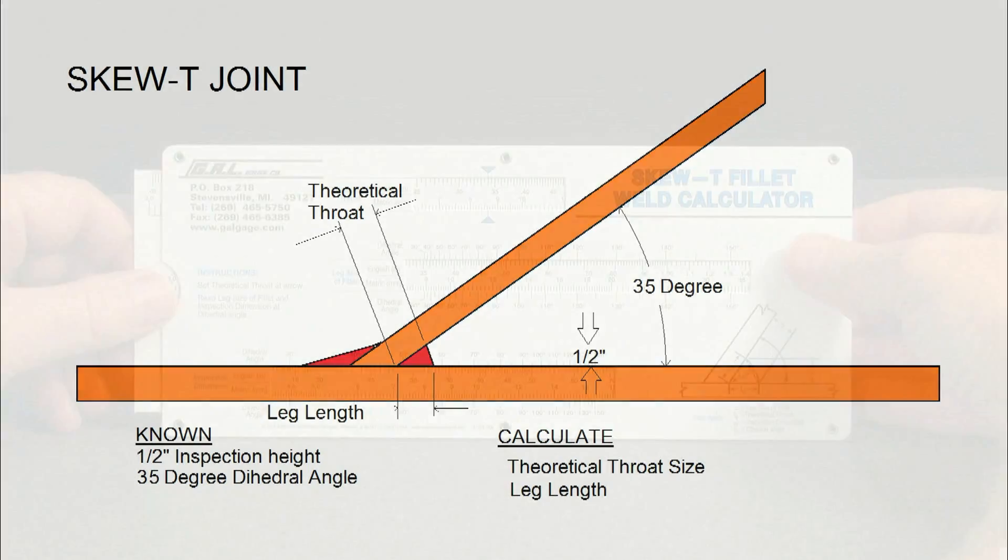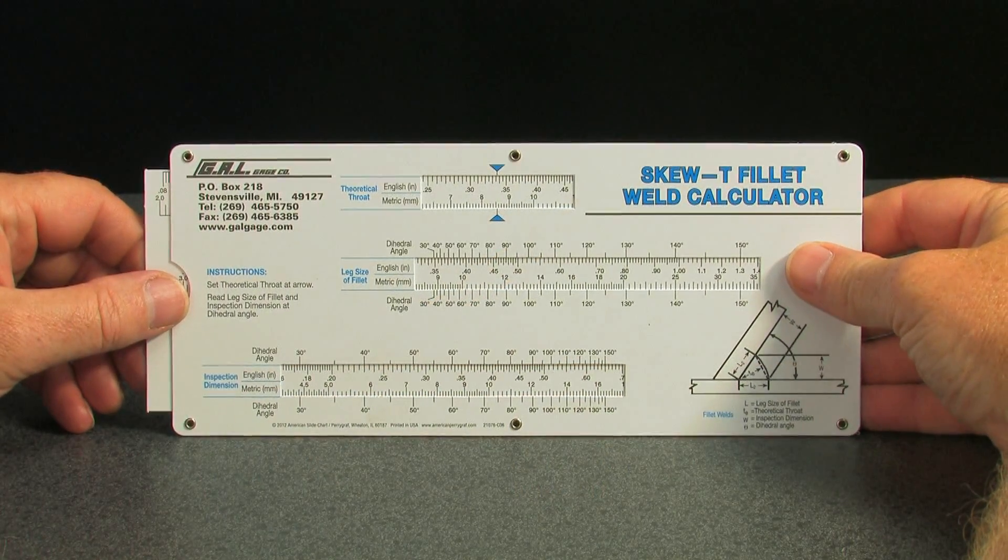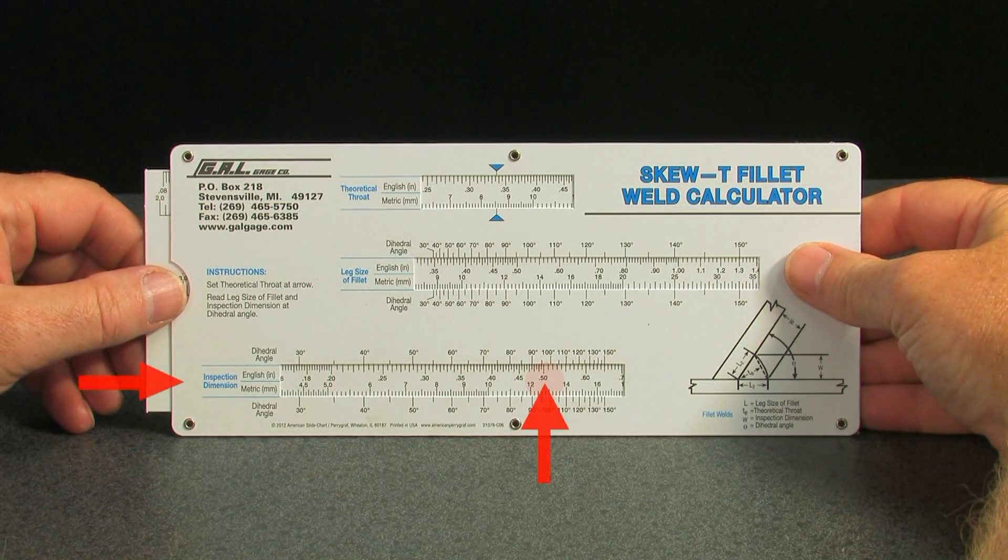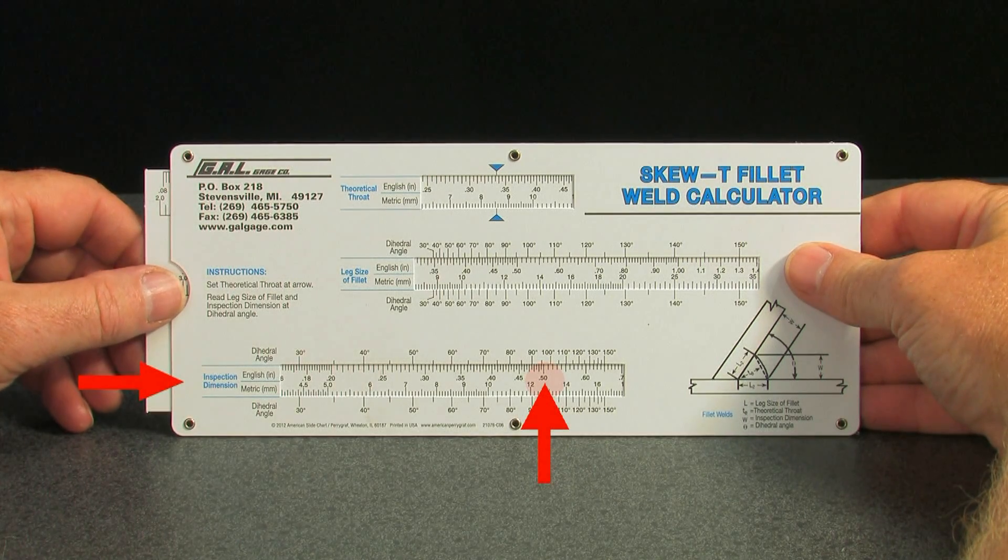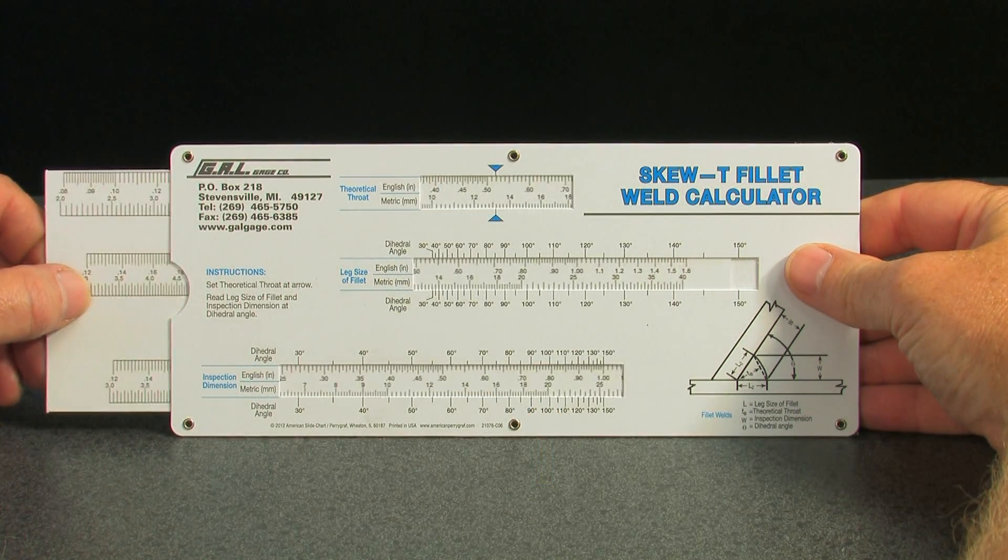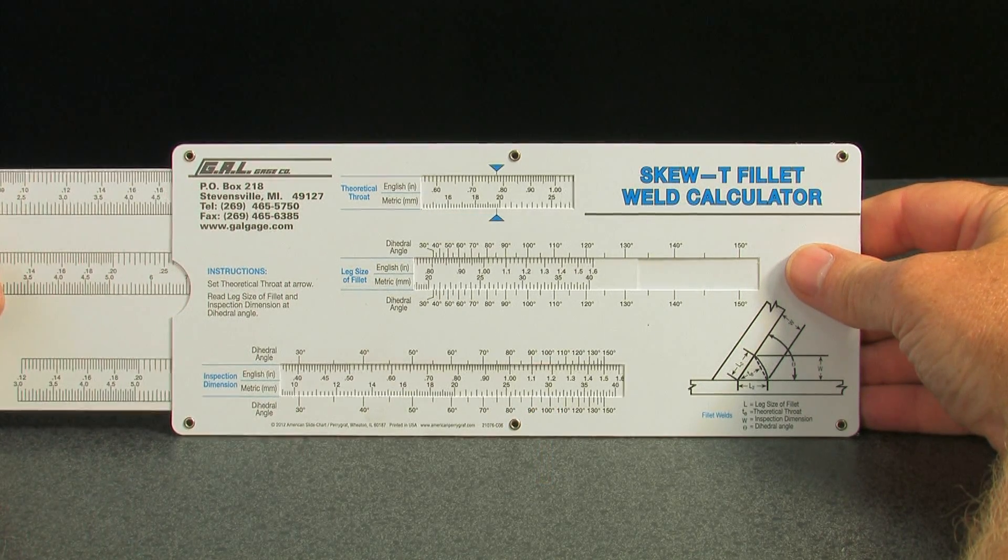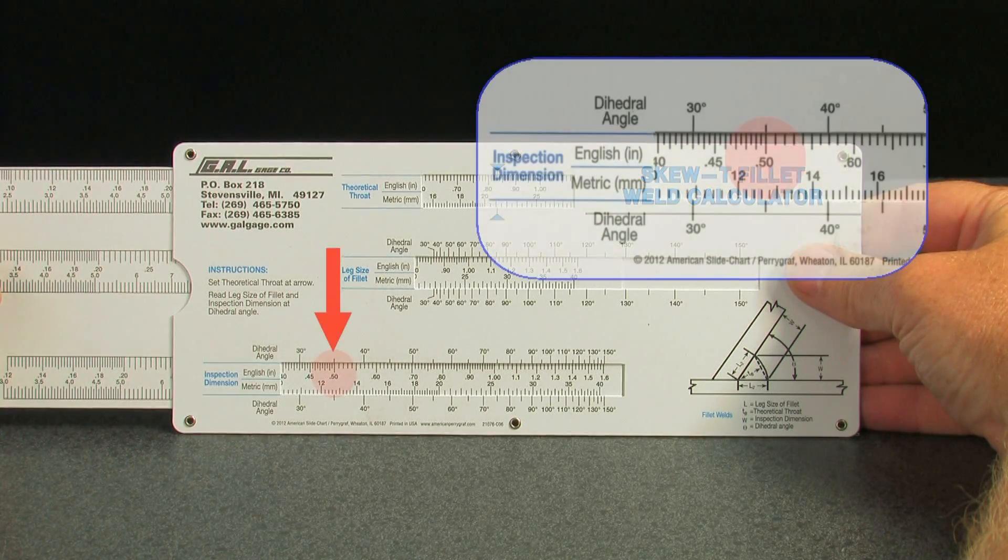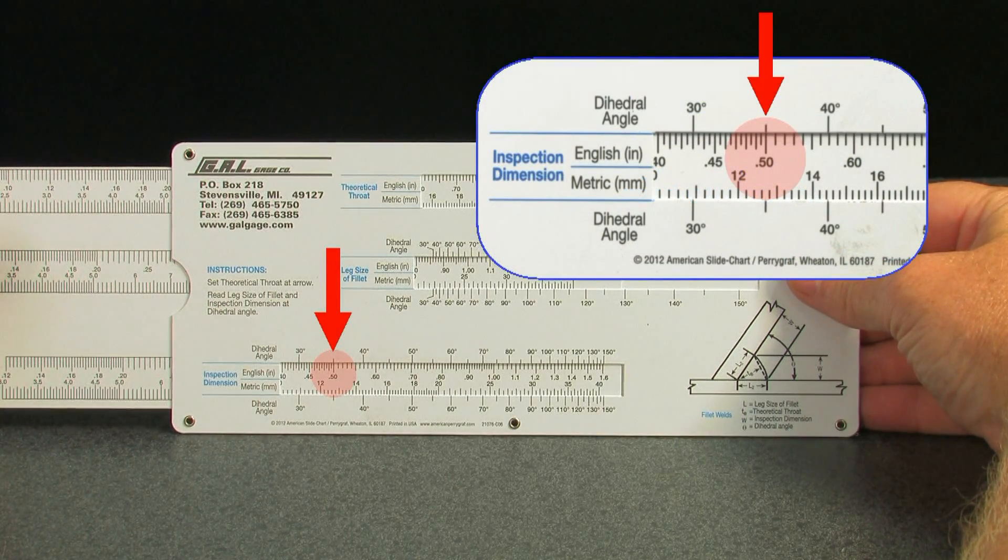First, find the 1/2 inch inspection dimension on the lowest scale of the calculator. Slide the inside card until the 1/2 inch dimension lines up with the 35 degree dihedral angle.